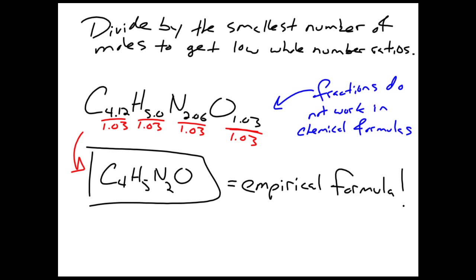Note that sometimes when you divide by that smallest number, you might get a number that is not a whole number. For example, what if we got 5.5 for hydrogen? In that case, we need to take all the values after that first division and multiply them by 2 in order to get whole number ratios. Usually and ideally, you'll either get whole number ratios right from the start or you'll need to multiply by 2.